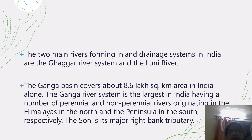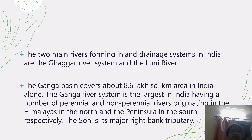Two main rivers forming the inland drainage system in India are the Khargara river and the Loony river. The Ganga basin covers 8.6 lakh square kilometers area in India alone. The Ganga river system is the largest in India, having a number of perennial and non-perennial rivers originating in the Himalayas in the north and the peninsula in the south respectively.